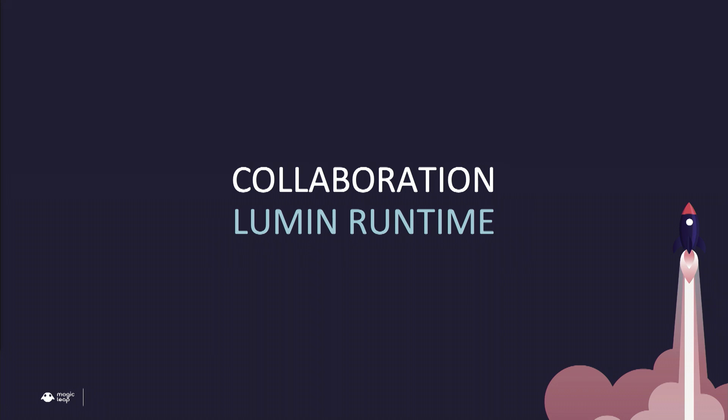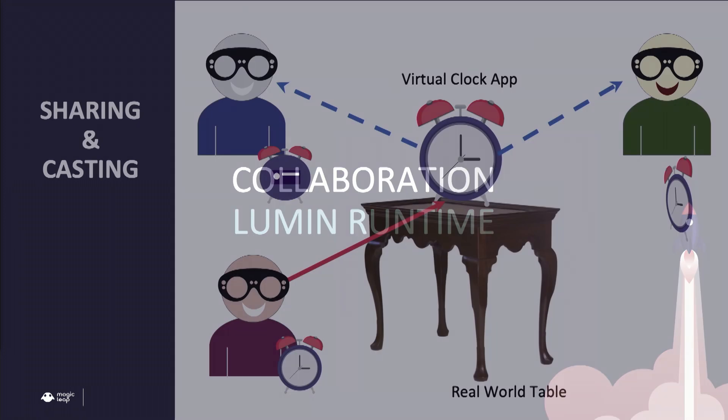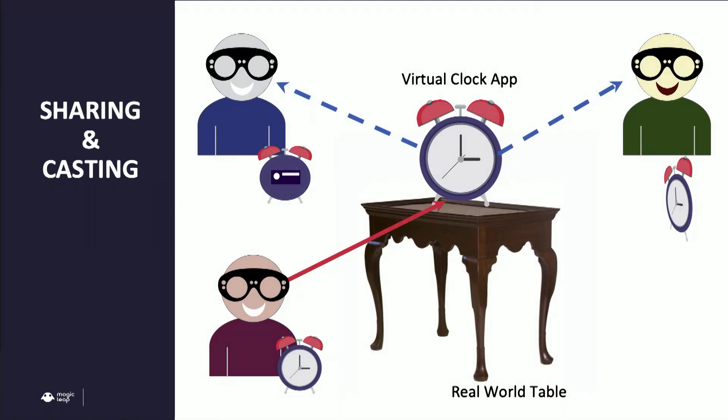Now that we've seen the high-level view of Lumen Runtime architecture, how did we use it for collaboration? Let's take an example: I have an app, I want to share it with people, but I don't want them to install it. If I can just cast this app to you, then you see it from your own perspective. If I place a clock here, I see the clock face; you may see the back of the clock. All of that is done ready-made, and the app developer doesn't even need to worry about it.